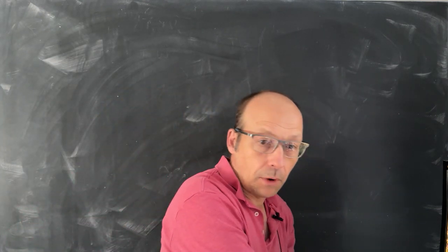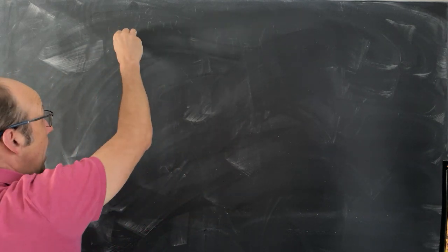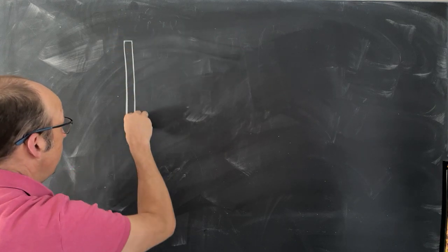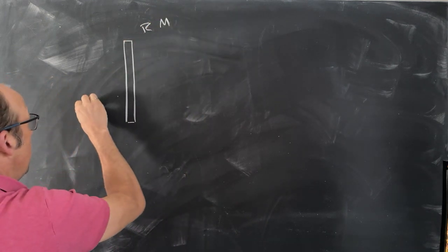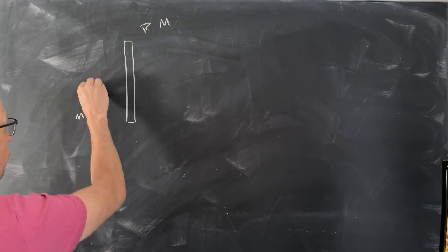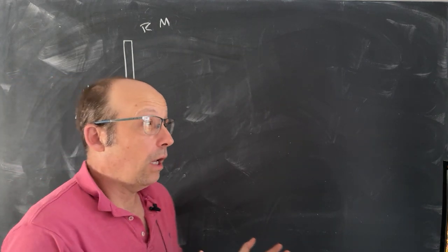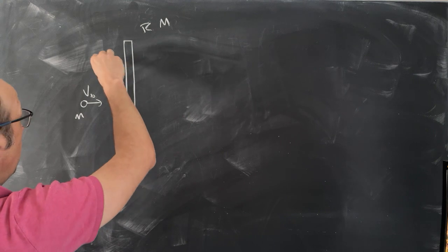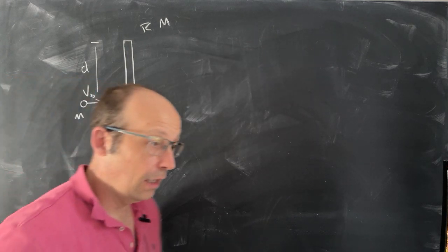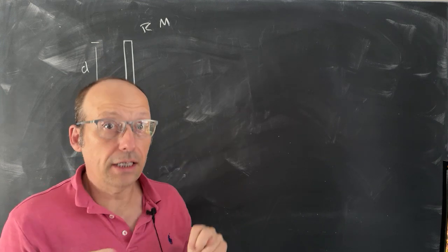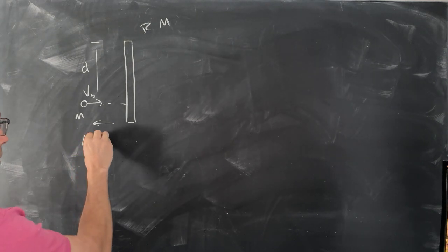Let's get to it — I'm going to put my sticks down and pick up my chalk. Imagine I have a frictionless plane and a stick. I'm going to call the stick's length R. It has a mass capital M, and then I have a ball coming in with a lower mass m, with initial velocity V_B. It's going to hit the stick at some point. The distance from the top to where it gets hit, I'm going to call D.